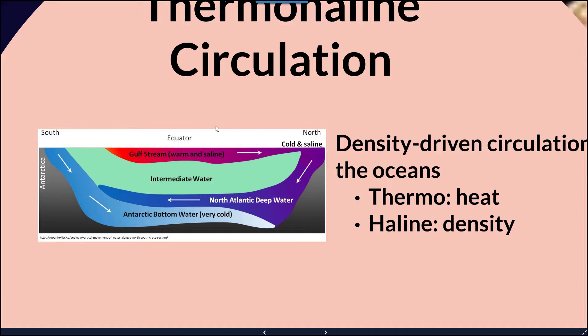At the equator, we have the Gulf Stream — warm saline water that shifts northward. In the North Atlantic, that water sinks and turns into what we call the North Atlantic Deep Water. In the southern ocean, cold dense water sinks toward the bottom of the ocean floor, and if it originates in Antarctica we refer to that as Antarctic Bottom Water, which is very, very cold. Colder, more dense water tends to sink to the bottom, whereas warmer water remains more towards the surface.